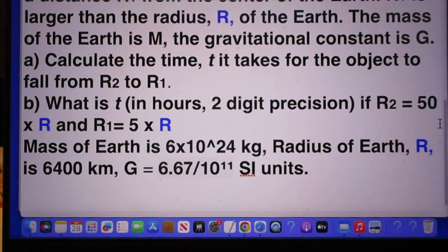Because once you have A right, the answer to B is simply a matter of plugging in the numbers. What is T in hours to two-digit precision if R2 is 50 times the radius of the earth and R1 is 5 times the radius of the earth?